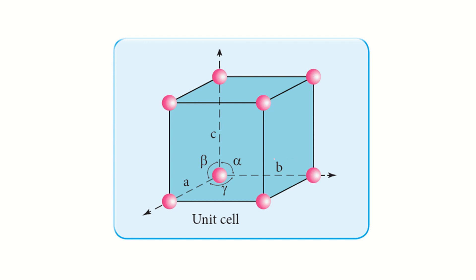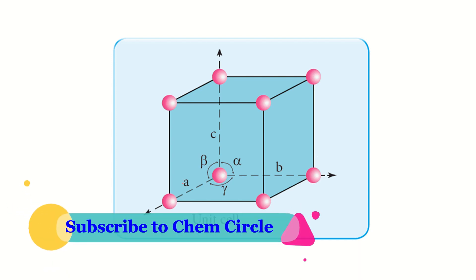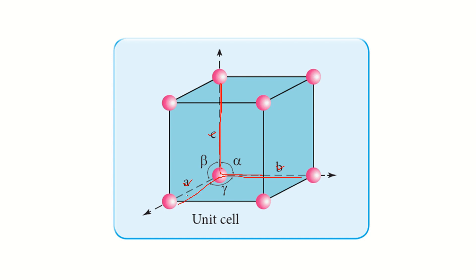Unit cells are categorized by six parameters, namely a, b, and c — the three edge lengths of the unit cell. These edge lengths make angles between them: alpha, beta, and gamma. The edge lengths b and c create angle alpha, edge lengths a and b create gamma, and edge lengths a and c make beta. So totally, a, b, c, alpha, beta, and gamma are six parameters used to categorize the unit cell.